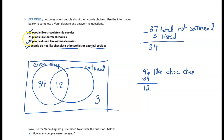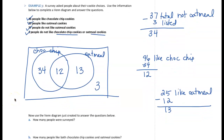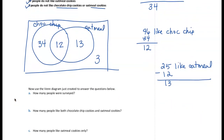The last statement is that 25 people like oatmeal cookies. Within the oatmeal cookie set, it needs to total 25 and there are already 12 listed in the center. So there are 13 that go in the right blank space, making the oatmeal cookie set total 25. All spaces of the Venn diagram are now filled in.